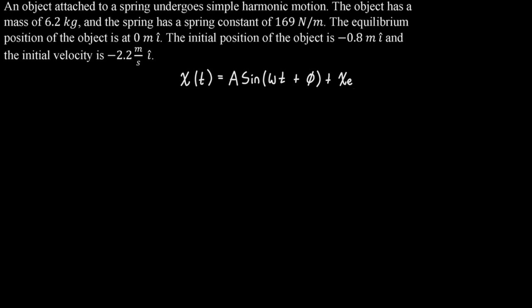The easiest place to start is with the angular frequency, using the equation we derived earlier. The angular frequency equals the square root of k over m, so we get the square root of 169 newtons per meter divided by 6.2 kilograms, which gives us 5.221 radians per second. The angular frequency tells us how fast this oscillation completes one cycle. Since a full circle is 2π radians, roughly 6, this means when set into motion it will take a little over a second to complete a cycle.